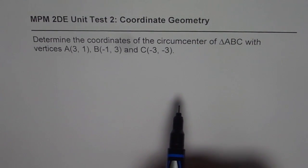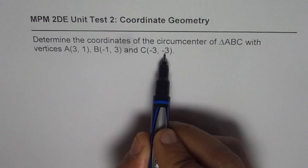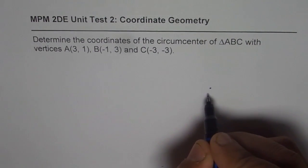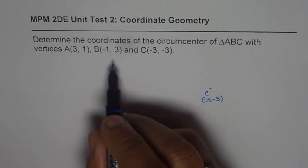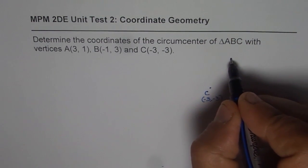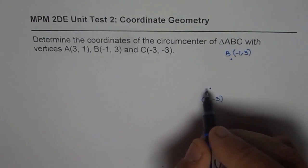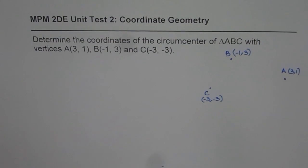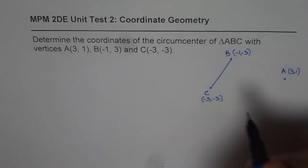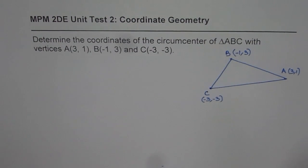To begin with, let us approximately sketch our triangle. We have three points A, B, and C. C is at (−3, −3), which is probably the leftmost point. B is at (−1, 3), which will be kind of here. And A is at (3, 1), somewhere here. Connecting these points on a grid is even better, but this approximate sketch will help us solve the problem.